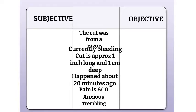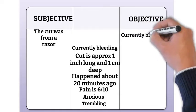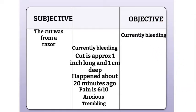The first piece of information we collected was that this cut was from a razor. We didn't see it happen — the only way that we could possibly know it happened this way is if the patient told us. Therefore, this would go under subjective data. Next, the patient is currently bleeding. Don't get tricked here. Yes, the patient said 'my finger is bleeding,' but we can see this — we can see with our own eyes that the patient's cut is bleeding. Therefore, that is objective.